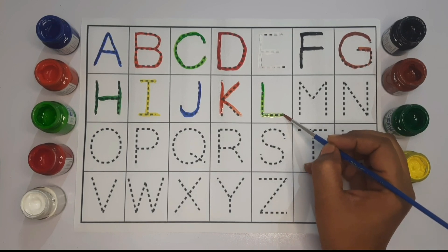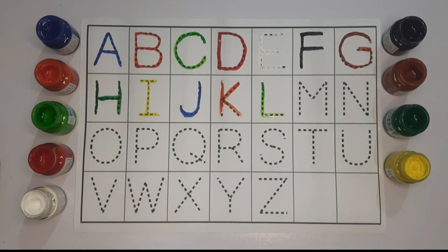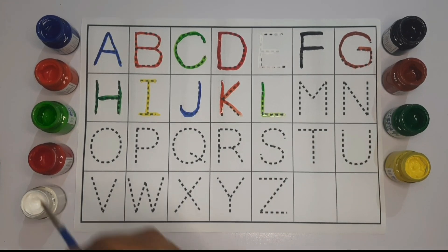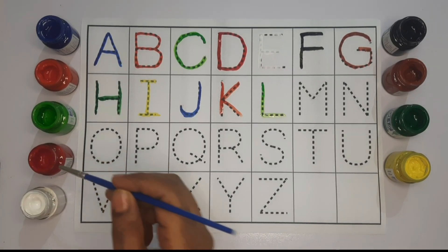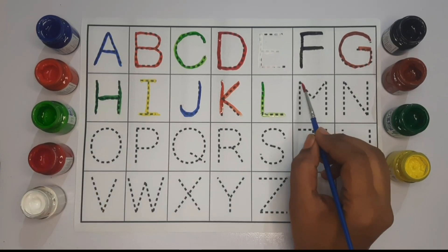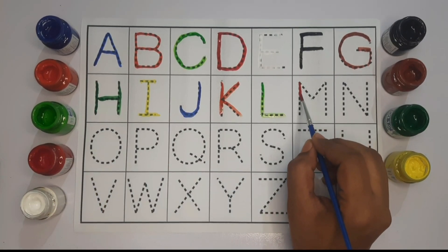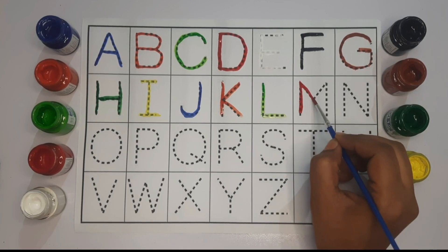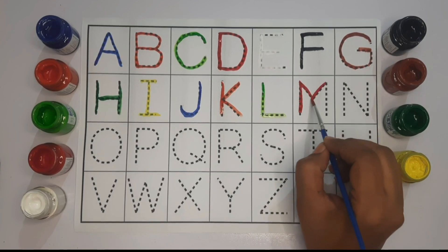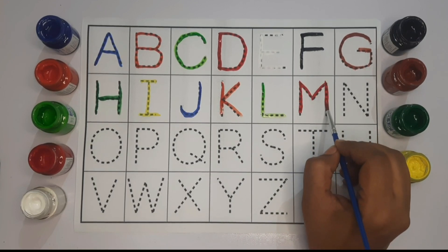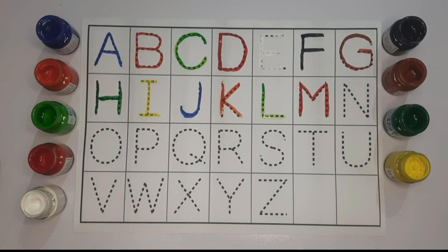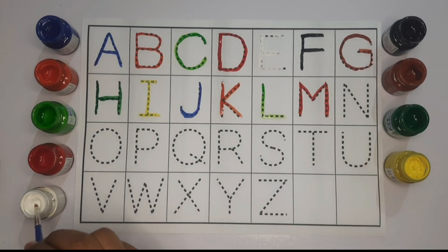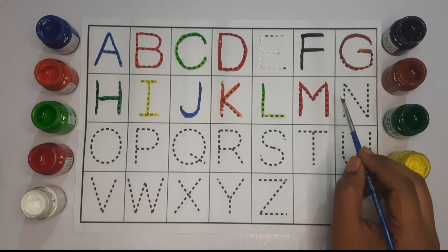This is L. Now we will use red color to write M. This is M. Now we will use white color to write N.